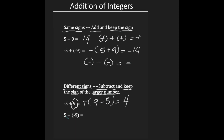Here in the second example, I have 5 plus negative 9. The signs are different — you're adding a positive with a negative — so you're going to subtract. You're going to look to see who is the bigger number. It's the 9. We're going to keep the negative sign, so our answer is negative 4. When your signs are different, you must subtract, but you keep the sign of the larger number.